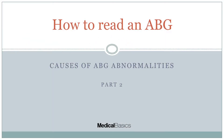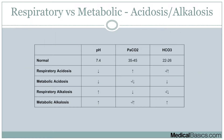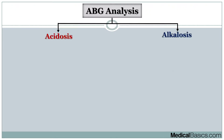This is part two of our video series on how to read an ABG. In this video, I'm going to go over this diagram and talk about all the different types of causes of acidosis versus alkalosis, breaking it down between respiratory and metabolic. In the first video, I talked about how to determine whether something is metabolic versus respiratory, as well as acidotic and alkalotic. Definitely check out the first video if you haven't. Now we're going to break down ABG analysis.